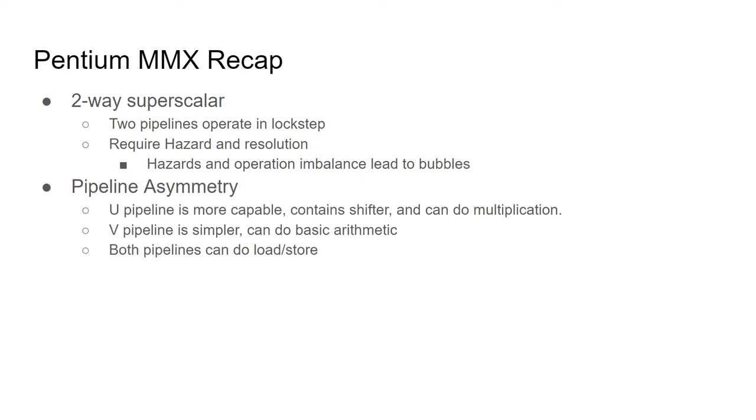Furthermore, the two pipelines in the Pentium MMX are asymmetric, meaning that one pipeline is more capable than the other. The two pipelines were named U and V. The U pipeline contains an integer ALU, a shifter, and likely a multiplier. The V pipeline is much simpler, containing only an integer ALU. Both pipelines can perform load and store operations.